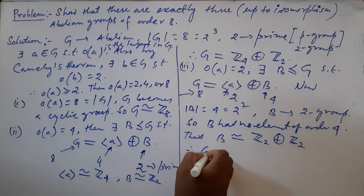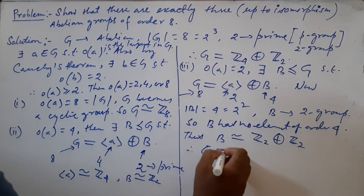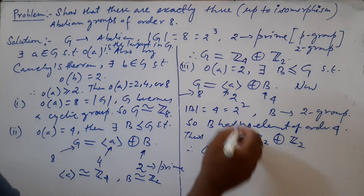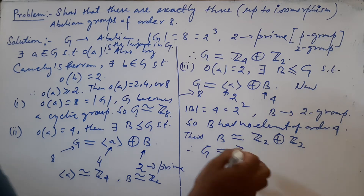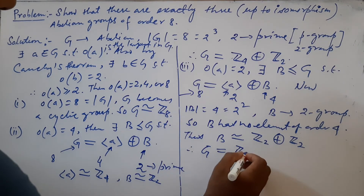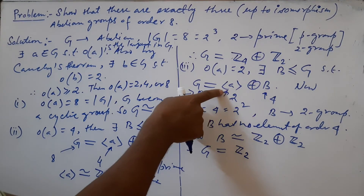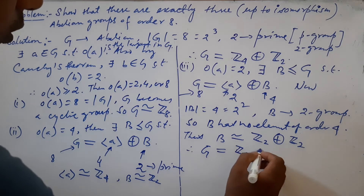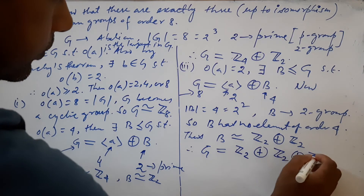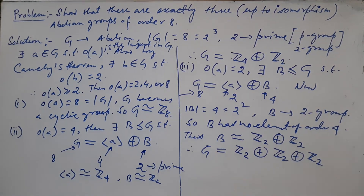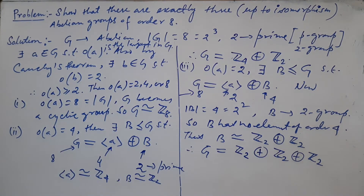So we find that G is the direct sum of ⟨A⟩ and B. Since ⟨A⟩ is a finite cyclic group of order 2, it is isomorphic to Z₂, and B is isomorphic to Z₂ ⊕ Z₂. Therefore G is isomorphic to Z₂ ⊕ Z₂ ⊕ Z₂.